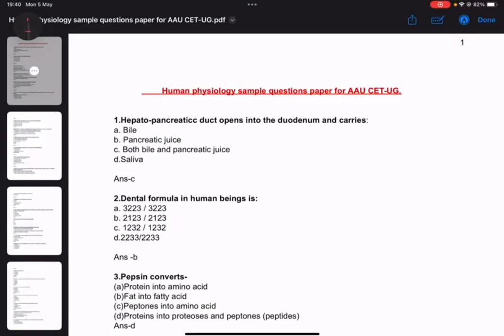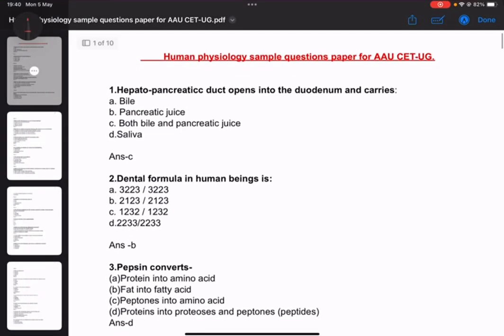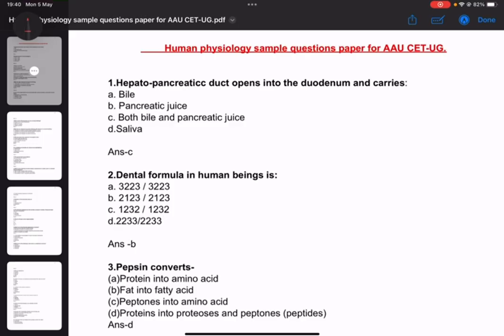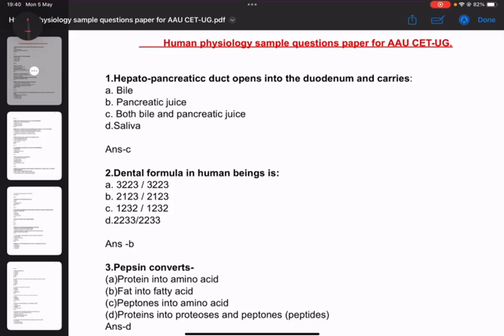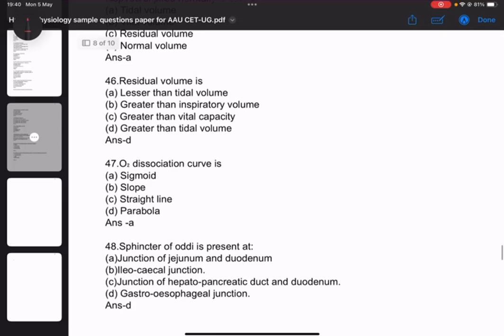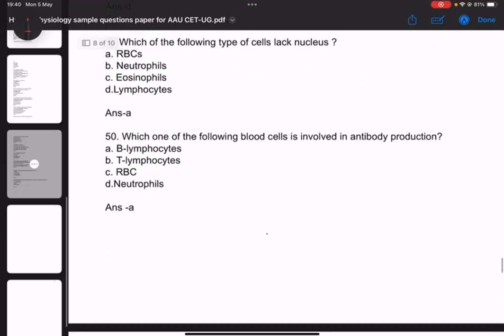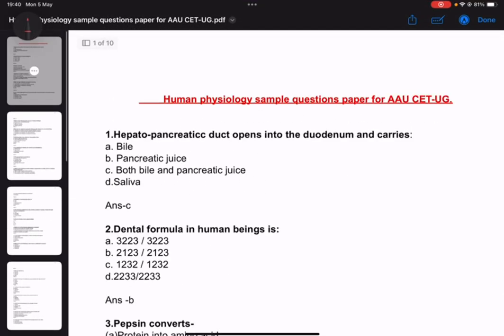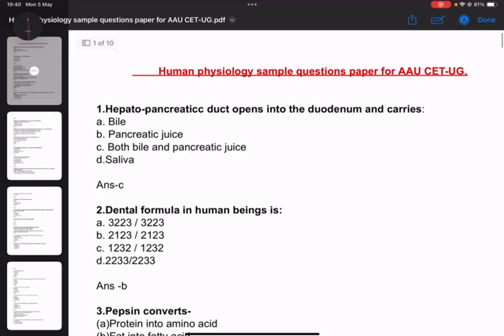Okay, this is the Human Physiology part to discuss for AAU CET-UG Medical University entrance exam. There are around 40 to 50 questions in this sample question set.